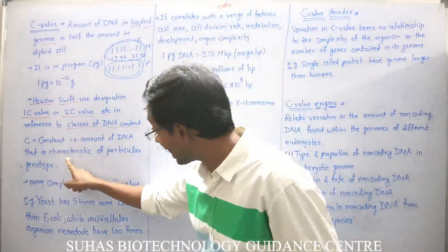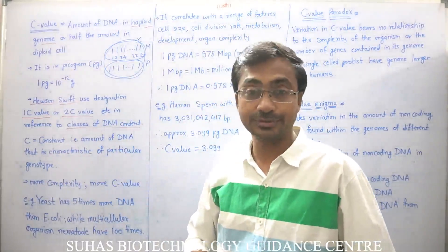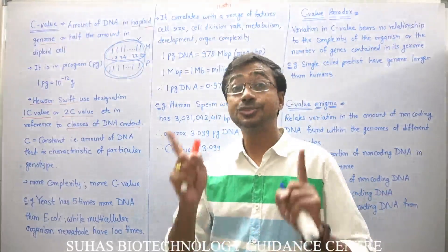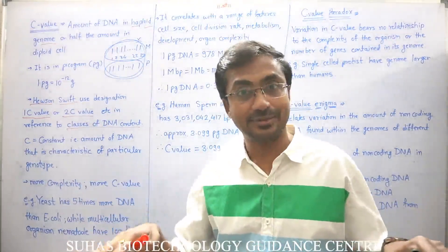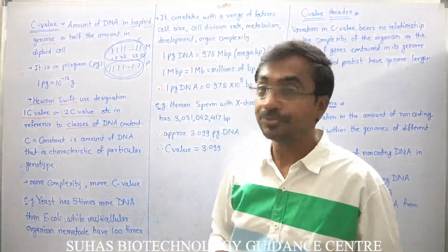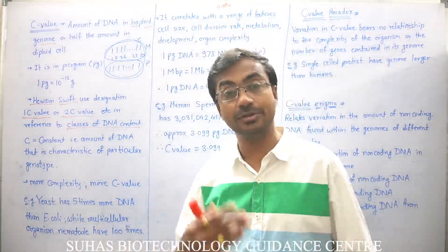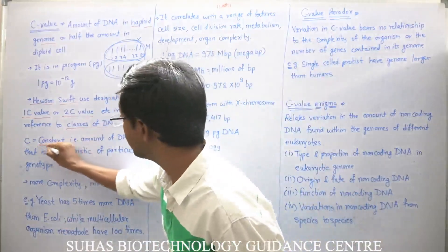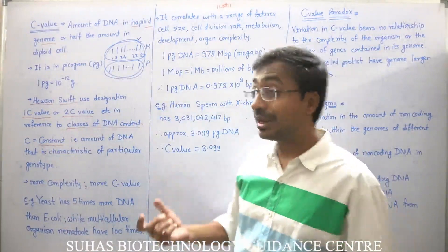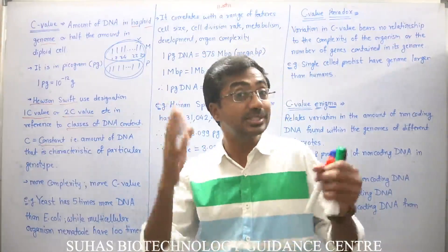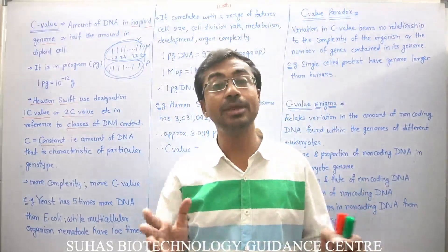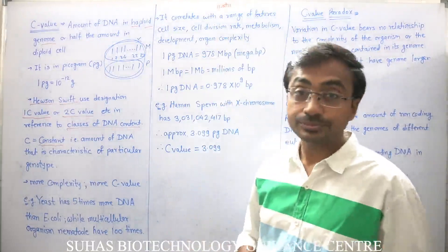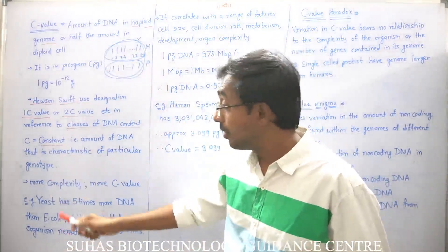The C value is a constant — it is the characteristic amount of DNA for a particular genotype or species. Of course, the C value will vary from species to species, because the amount of genes and other things will vary. The 'C' in C value stands for constant, meaning for a given species like humans, the haploid DNA content will be a specific, consistent property.